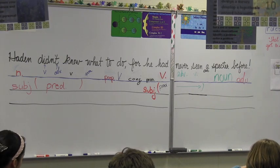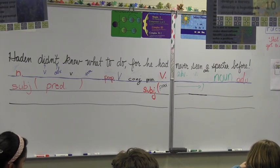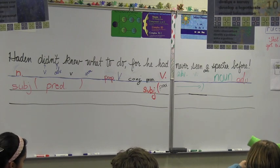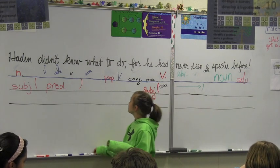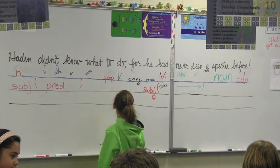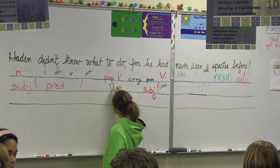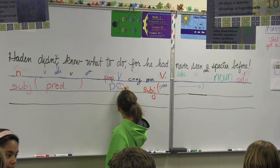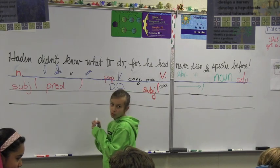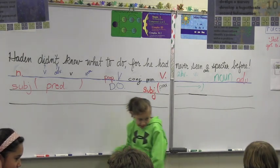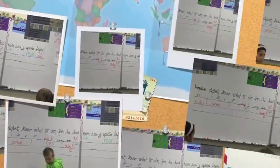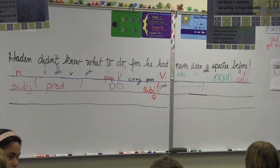And then we have a direct object, so what are we going to check for? Indirect object. And if there's an indirect object, where are we going to find it? In front of the direct object. Is there one? No, there's only a pronoun in front of the direct object. And that won't be our indirect object — an indirect object is going to be a noun.